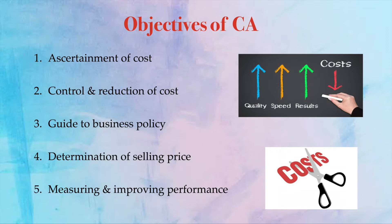Number five, measuring and improving performance. All business activities require periodical checking. Keeping a particular cost or selling price in mind, I need to measure how my business is performing. If anything is lacking, I need to improve the performance of my product or product line.